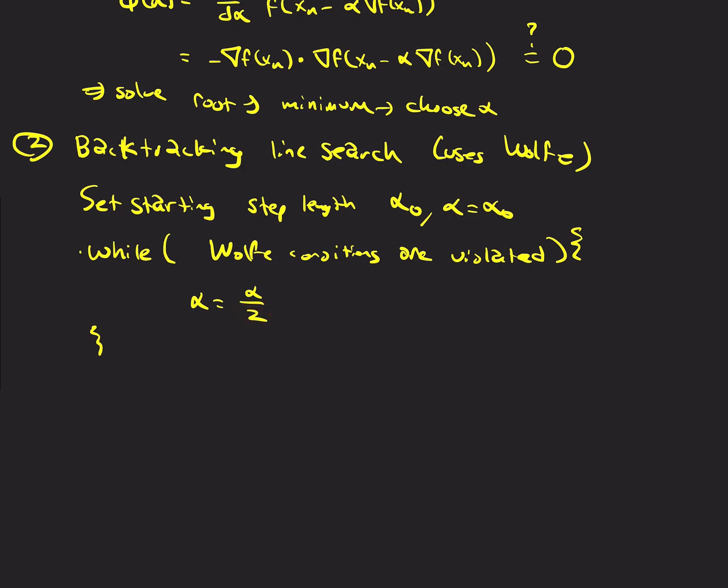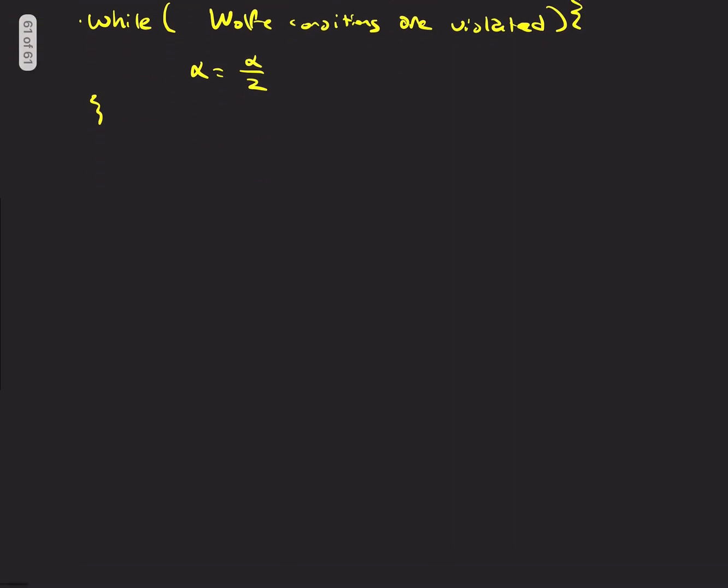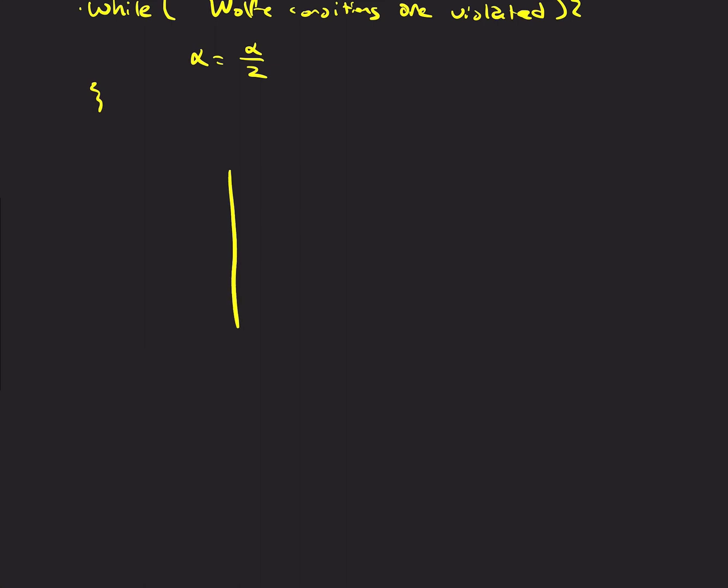Then, in that limit, we eventually should satisfy the Wolfe conditions. So, as long as, we don't know how long that's going to take. So, if we divide by two, we're going to get this exponential convergence. So, that we don't have to do this too many times. Because at the end of the day, you have a computational budget that you're dealing with.